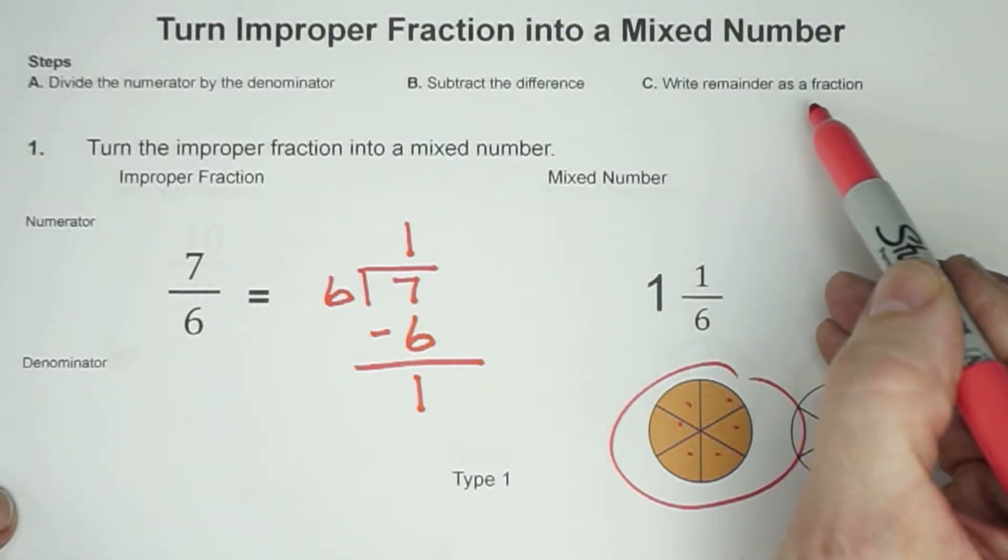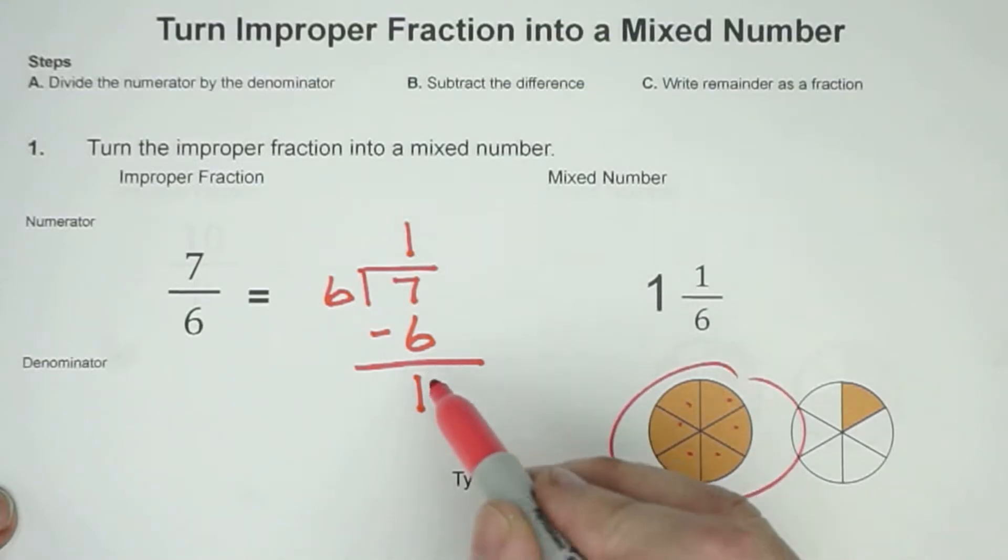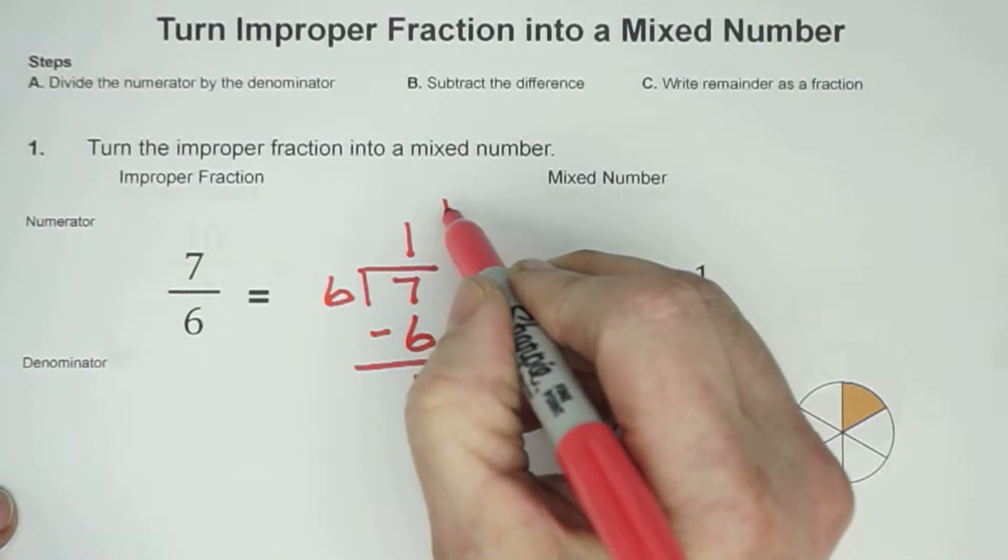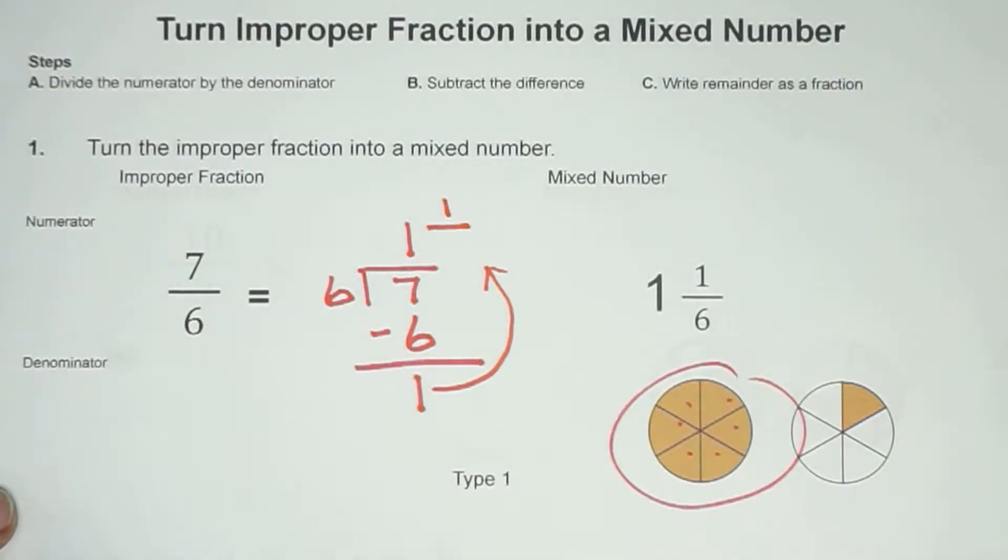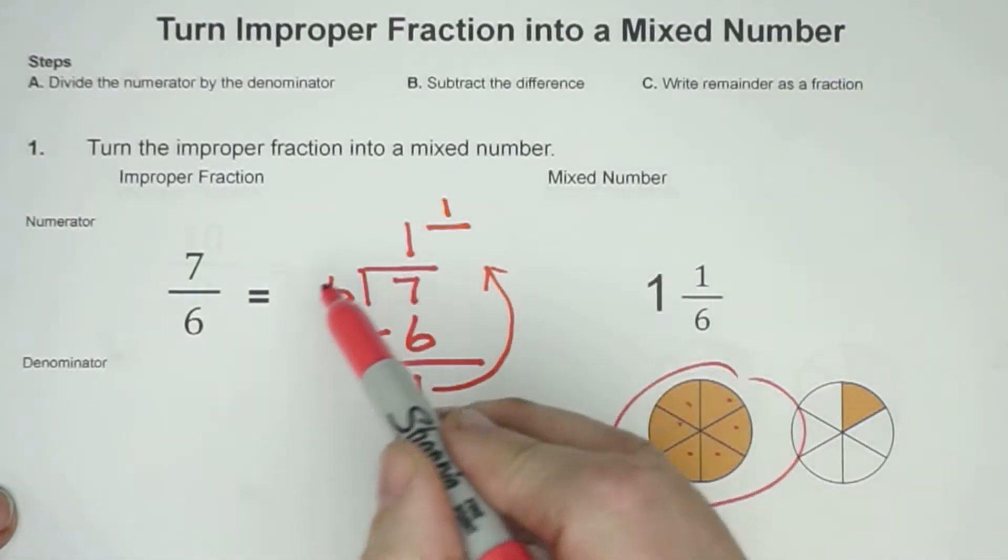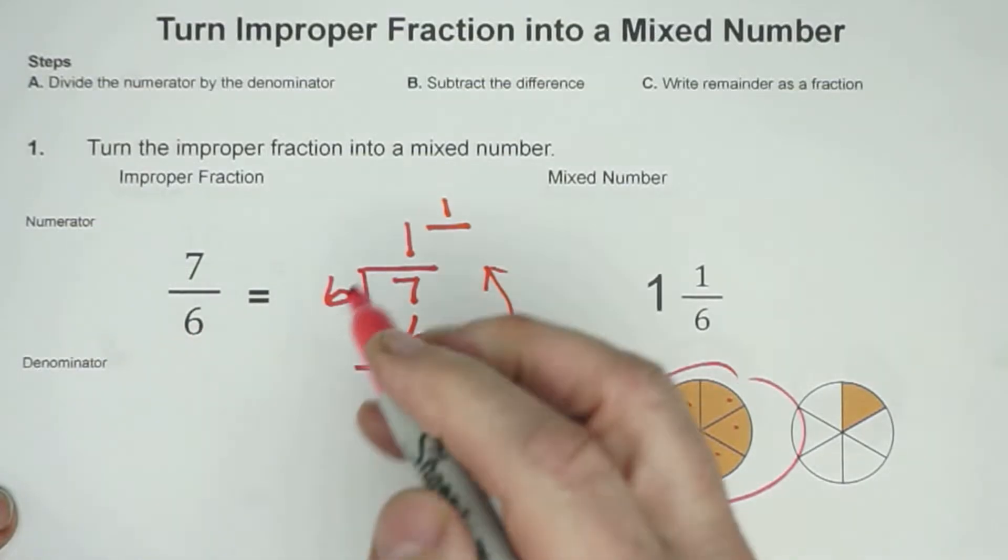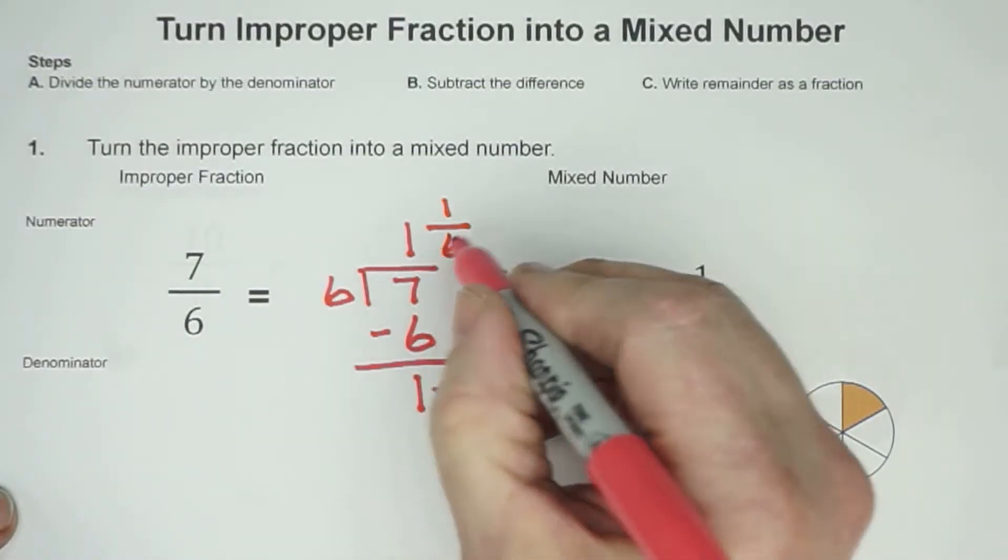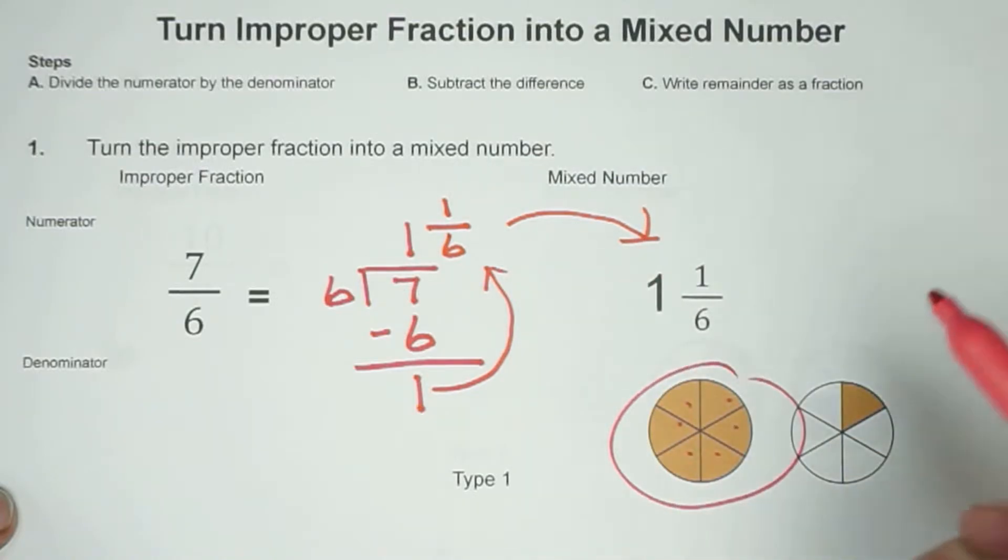Our last step is to write the remainder as a fraction. Well, here's our remainder. That's going to come up to the top. I'm going to write it here. That's going to become my numerator. And my denominator, I'm just going to borrow from over here. It's just going to be 1 and 1/6. And you can see how that matches that exactly.